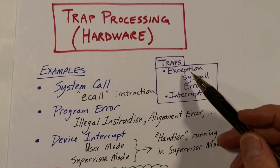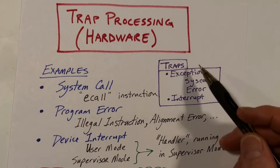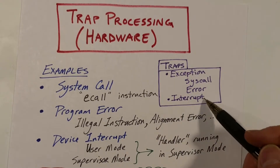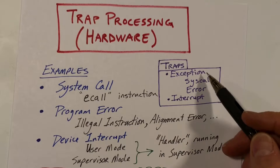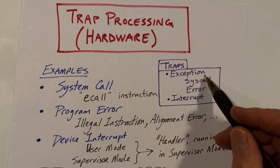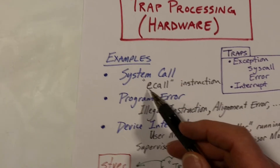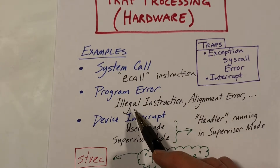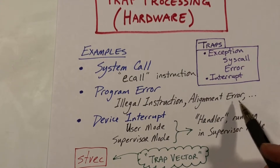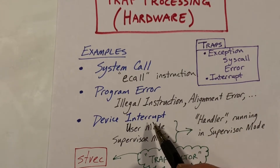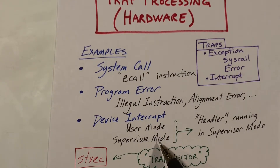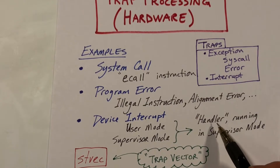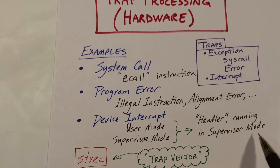There are two kinds of traps: exceptions and interrupts. A system call is a type of exception, and any kind of program error is an exception as well. The system call instruction in RISC-V is ecall, and program errors can include things like illegal instructions or alignment errors. We also have devices that can interrupt. The interrupt can occur when executing in user mode or supervisor mode, and regardless of mode, when it happens we begin executing handler code running in supervisor mode.